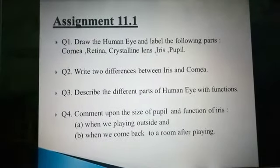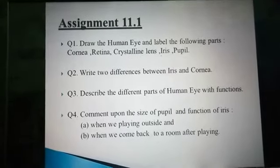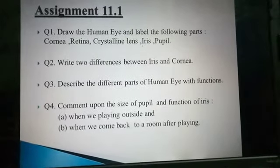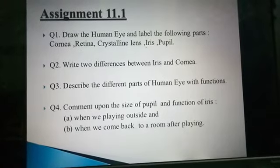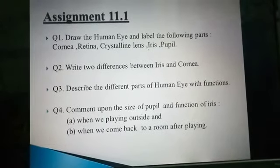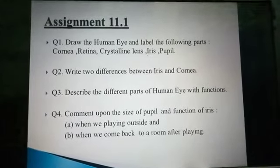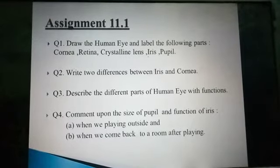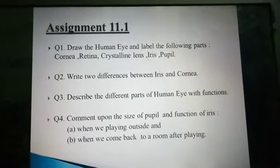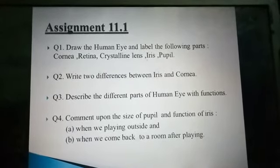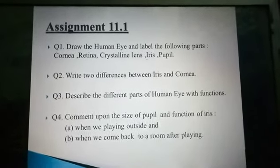This is your assignment 11.1. First, draw the human eye and label the following parts. Second, write two differences between iris and cornea. Third, describe the different parts of the human eye with functions. Fourth, comment upon the size of pupil and function of iris when we are playing outside and come back to a room after playing. Questions one, two, and three are clear. Question four is a little bit difficult — think over it and tomorrow I will give you the answer. Thank you.